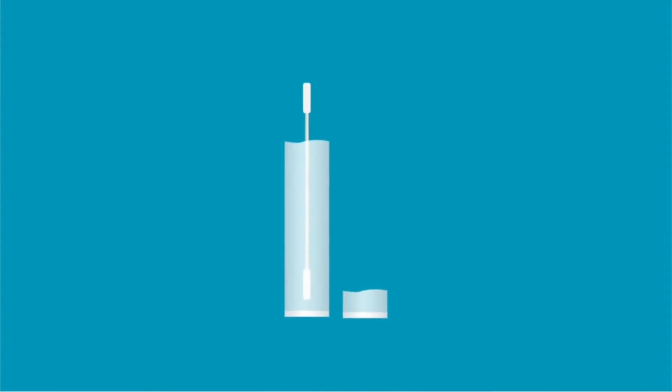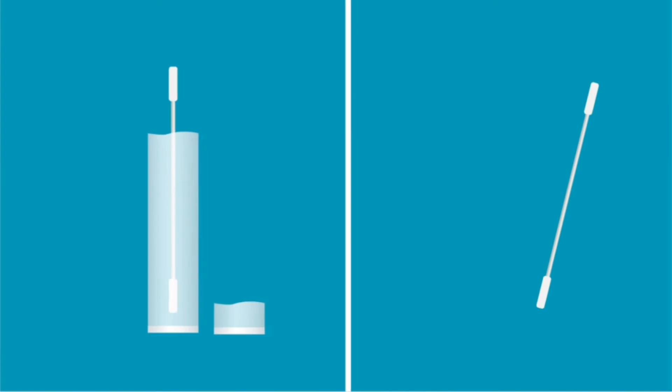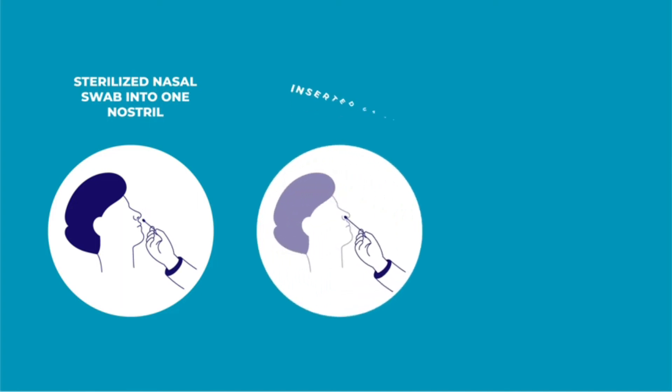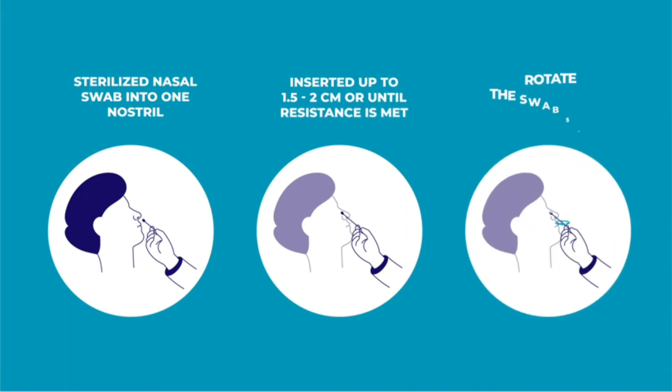Carefully open the sterilized nasal swab package at tail end and take swab out. Insert the sterilized nasal swab into one nostril. The swab tip should be inserted up to 1.5 to 2 cm or until resistance is met. Rotate the swab five times inside the nostril to ensure adequate cells are collected.